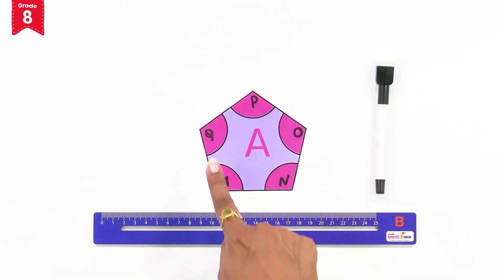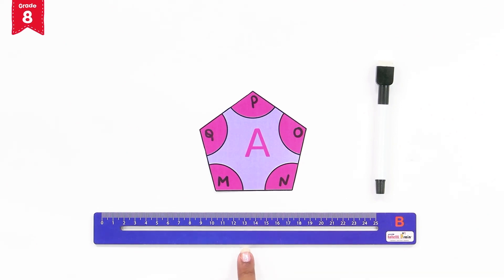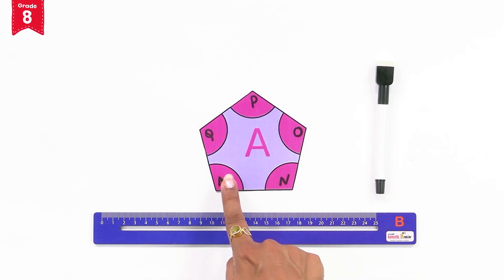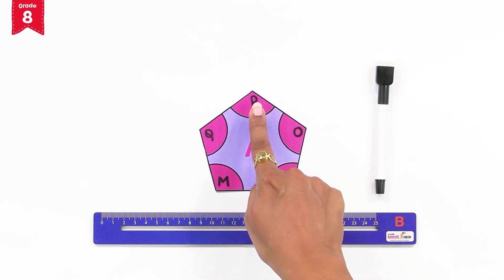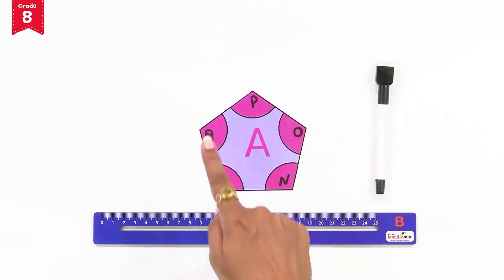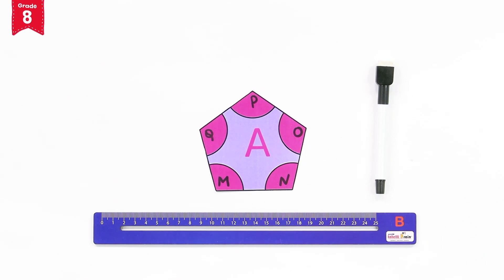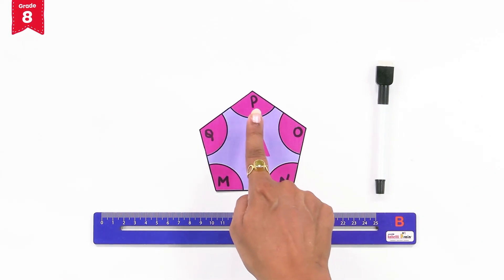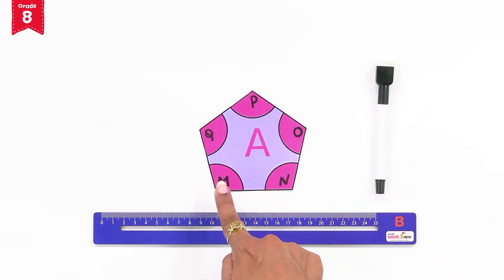Now let's perform an interesting activity — deriving the formula for calculating the sum of the interior angles of a polygon. Place the pentagon card, ruler, and marker on a table. The angles enclosed by adjacent sides are the interior angles. We have marked each vertex as M, N, O, P, and Q inside the polygon. We will now draw diagonals to connect the opposite vertices from vertex M. Vertices B and F are adjacent, so we connect the non-adjacent ones.